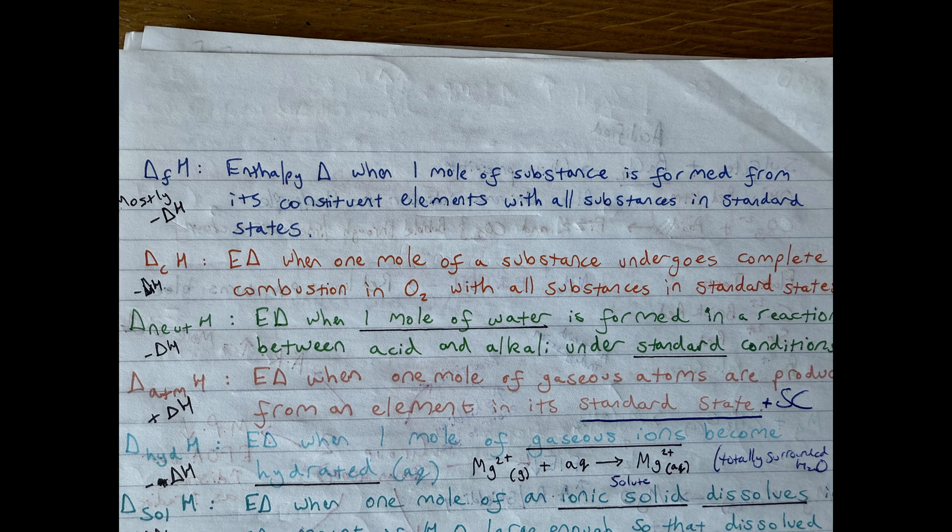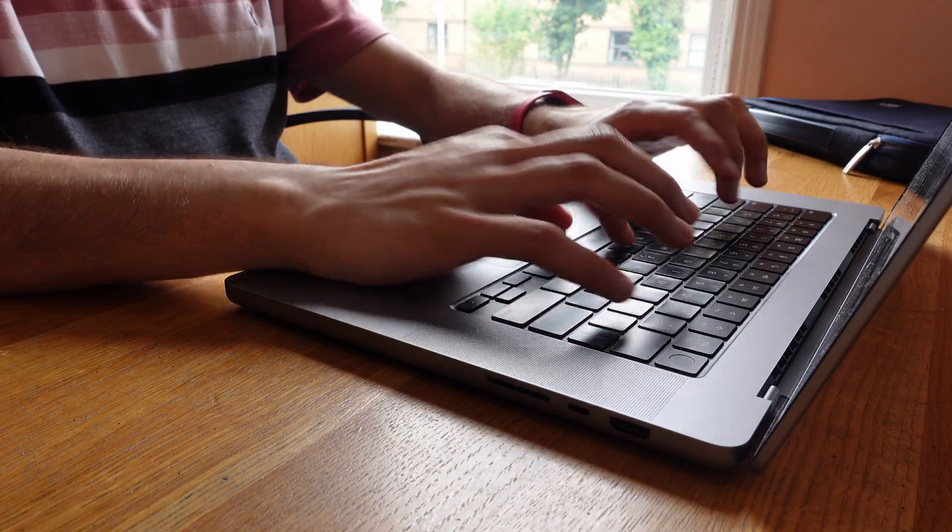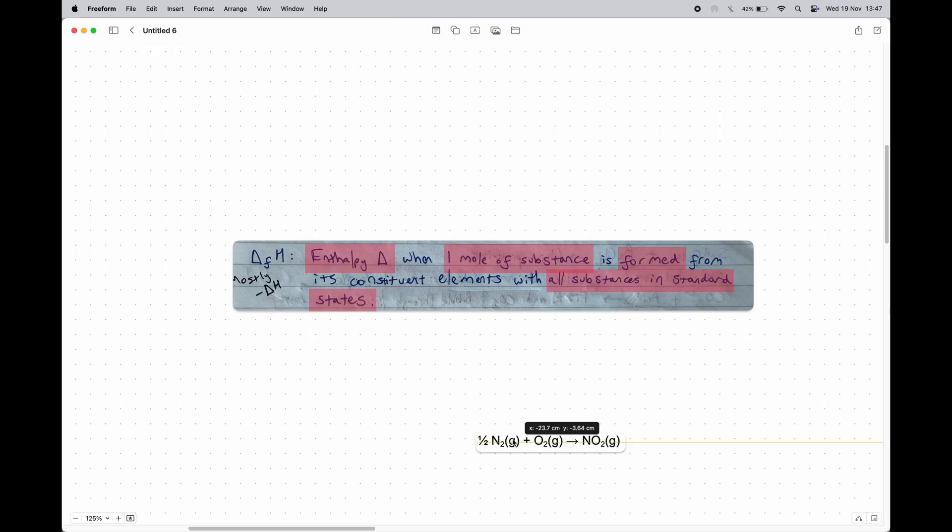Then go back to the definition. What is it actually about? This definition is about formation or forming a substance, so that needs to be in the definition. I would also find an equation for the definition, so I would link the definition to this equation, and using the equation, you can actually link it to the definition.